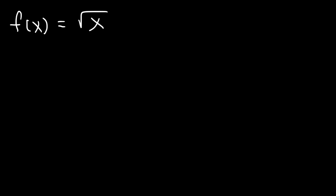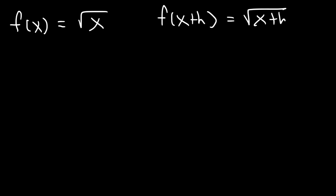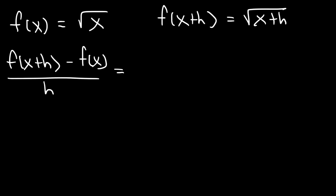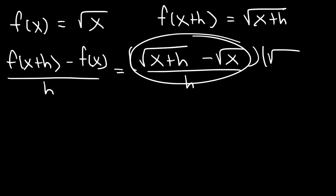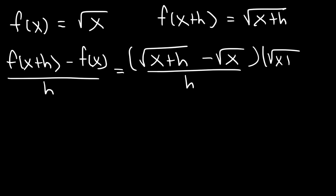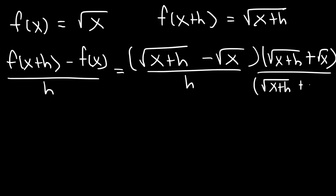Now what about the square root of x? Go ahead and determine the difference quotient. So f of x plus h is going to be the square root of x plus h. Let's start with the formula, replacing f of x plus h with the square root of x plus h, and f of x is the square root of x. If you have a radical, the best thing to do is multiply the top and bottom by the conjugate of the radical — since we have a minus sign, we use a plus sign. Whatever you do to the numerator you must do to the denominator so the value remains the same.